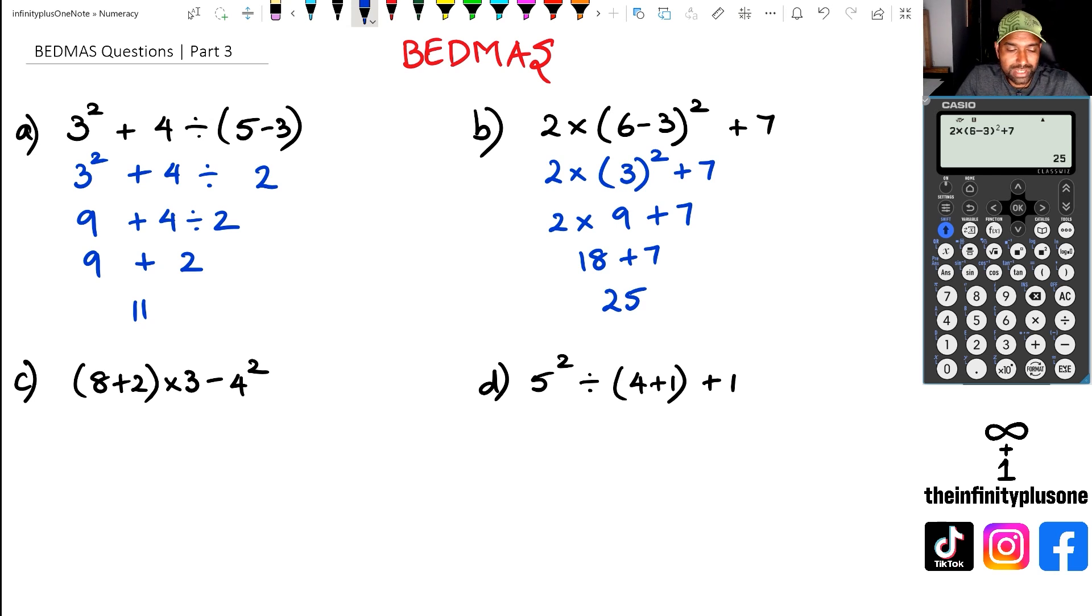Hopefully, you've had a chance to work out those answers. So we're going to do question C first. In this, we're going to do the brackets first. So eight plus two is ten. We've got ten times three minus four squared. Then we're going to do exponents, which is the powers. So we've got ten times three minus four squared. Four times four is sixteen. Then multiplication, ten times three is thirty, take away sixteen, and that's going to give us fourteen as our final answer.